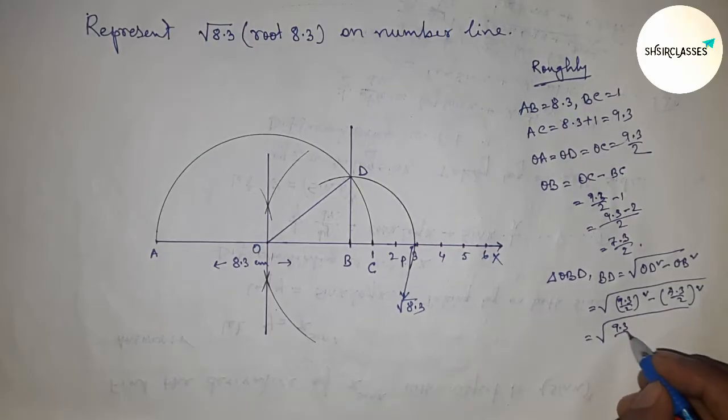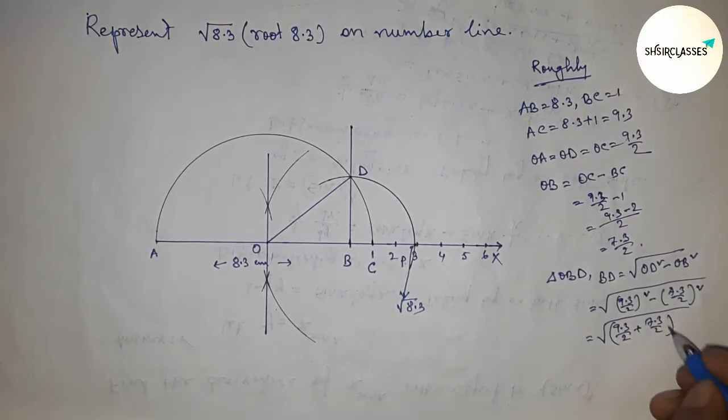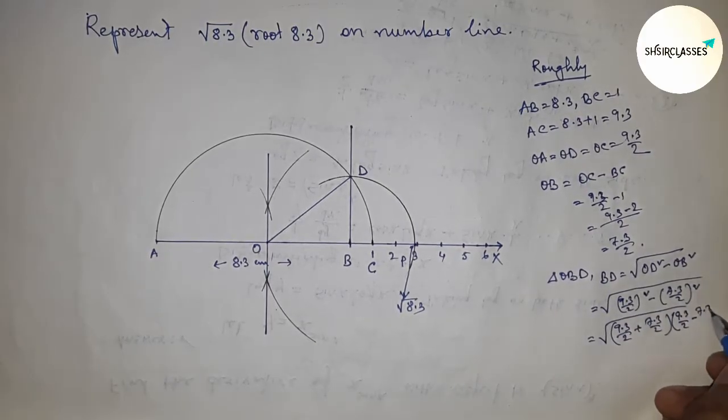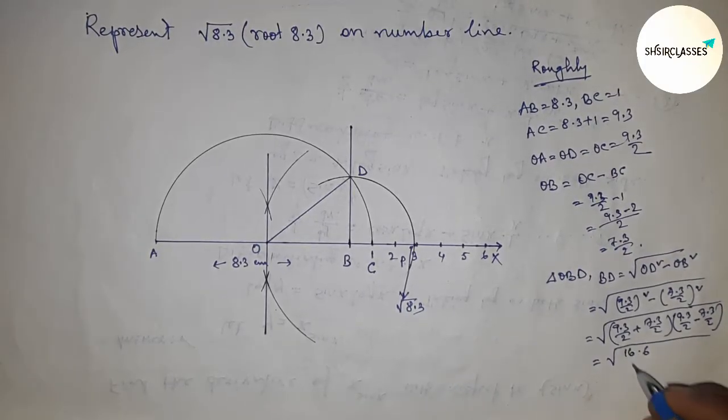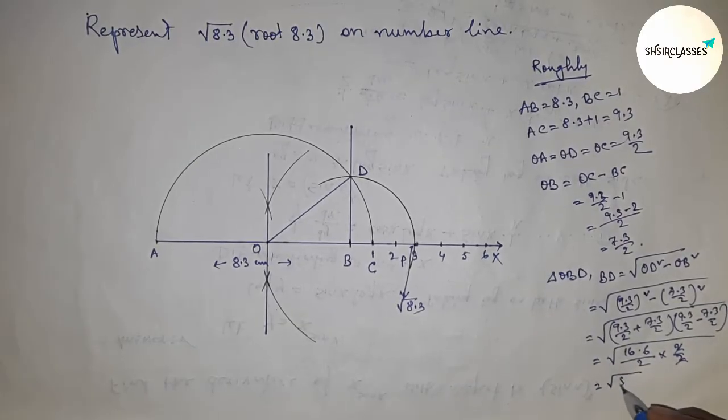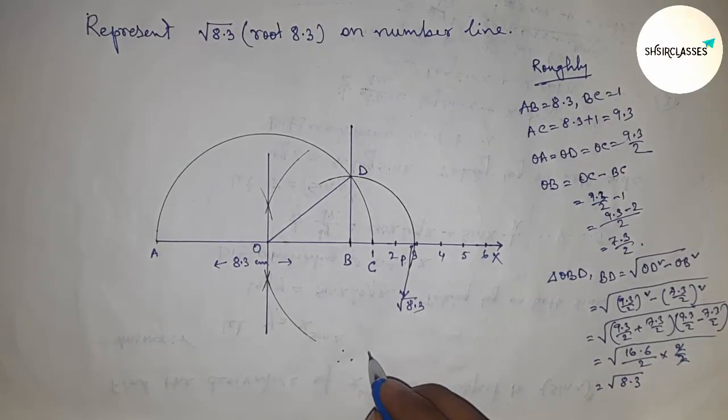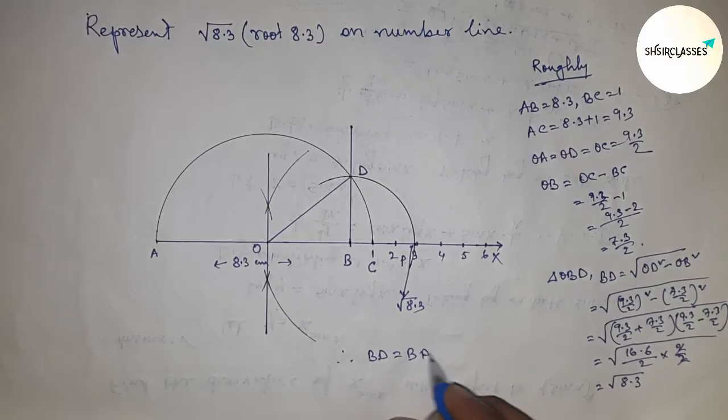Calculating this: 16.6/2 × 2/2 = 8.3. Therefore BD = BP = √8.3. Thanks for watching, please subscribe, like, and comment on my video.